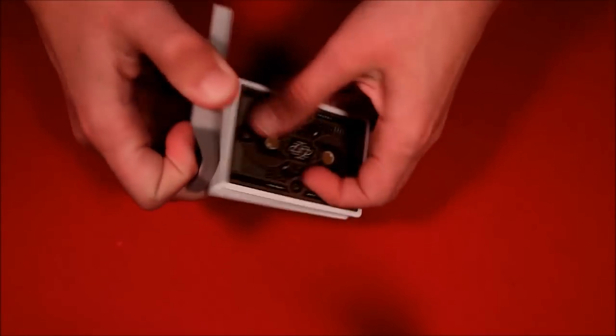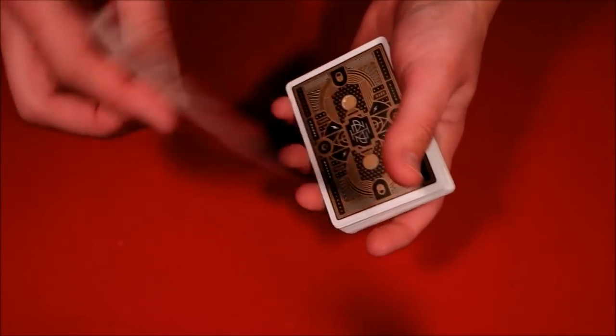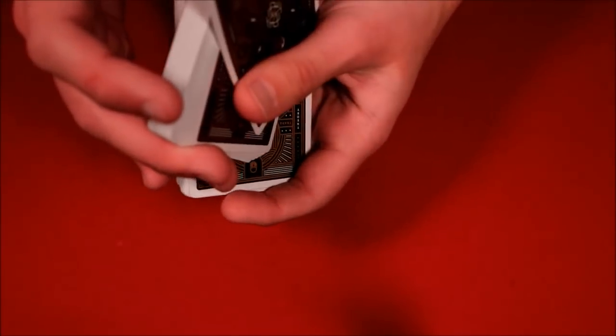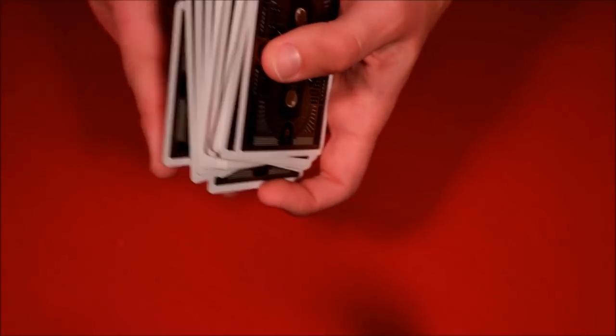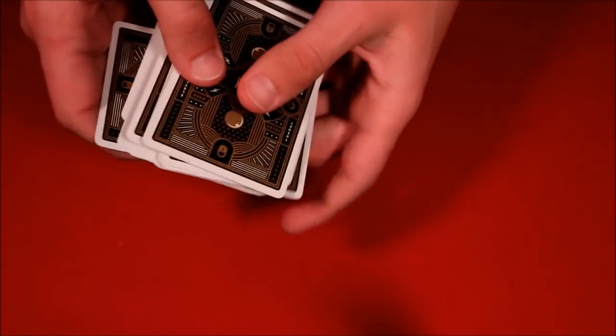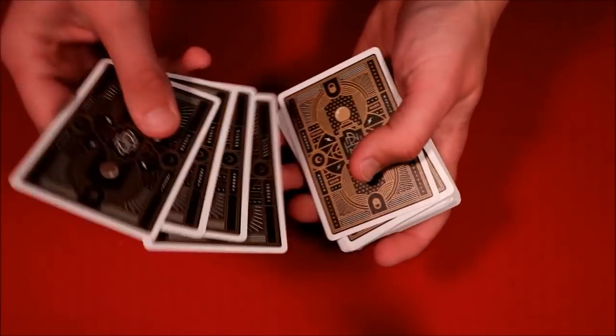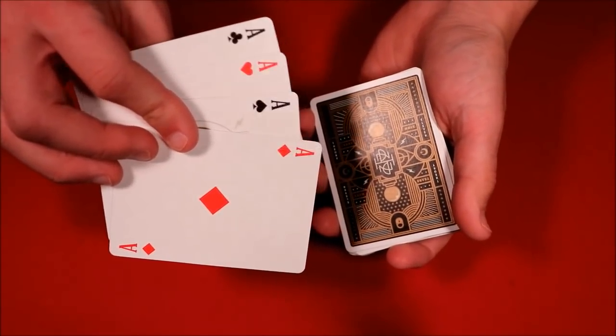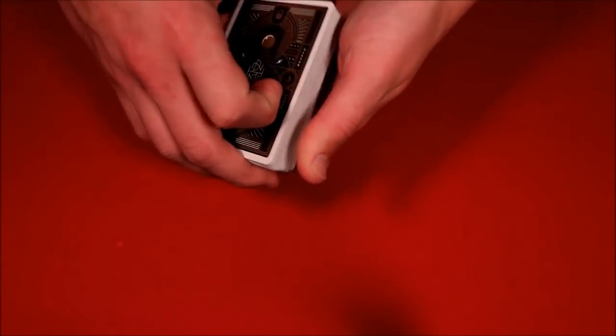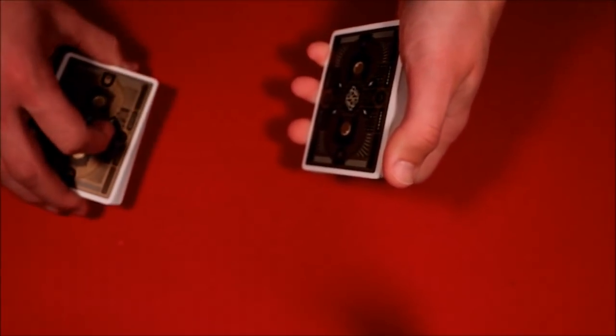You can shuffle this up as long as you leave the top stock on. Ask the spectator to tell you to stop whenever, but in reality you're leaving those four aces on top. You could also do the false overhand shuffle I taught not too long ago, where you leave the four aces or the top stock there. You can do that as well.